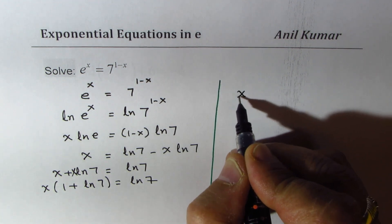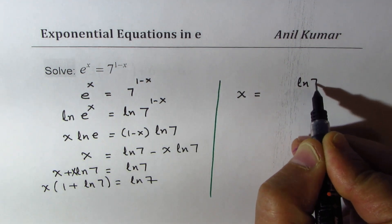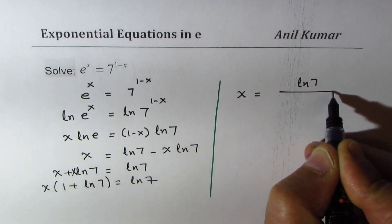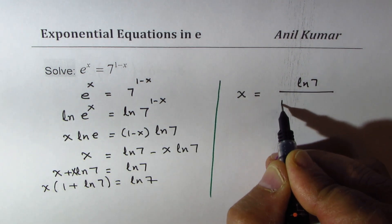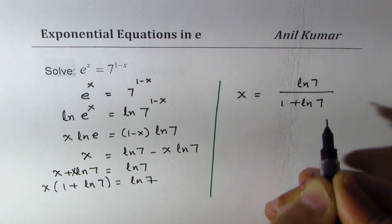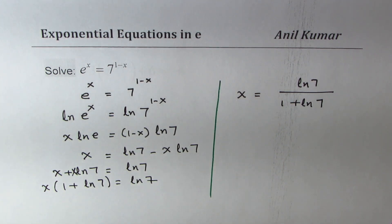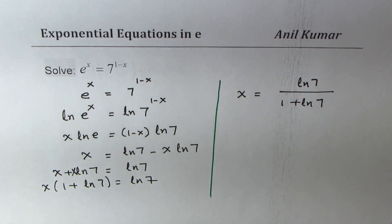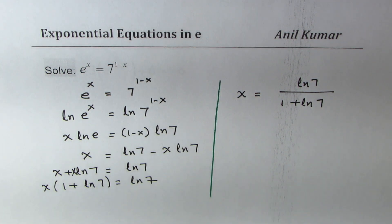x equals ln(7) divided by (1 plus ln(7)). We prefer to leave it in this form — this is the exact solution of the given equation.